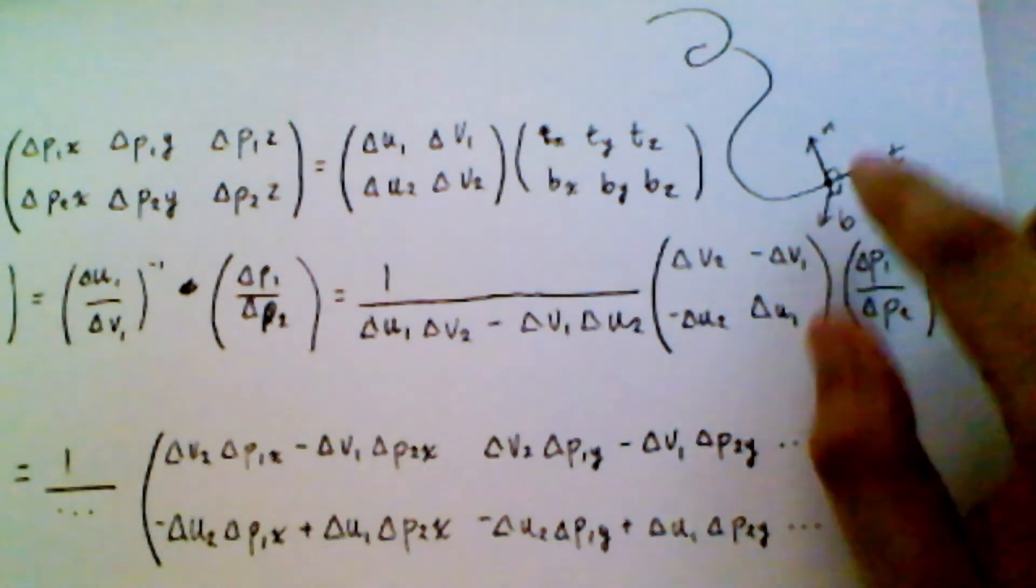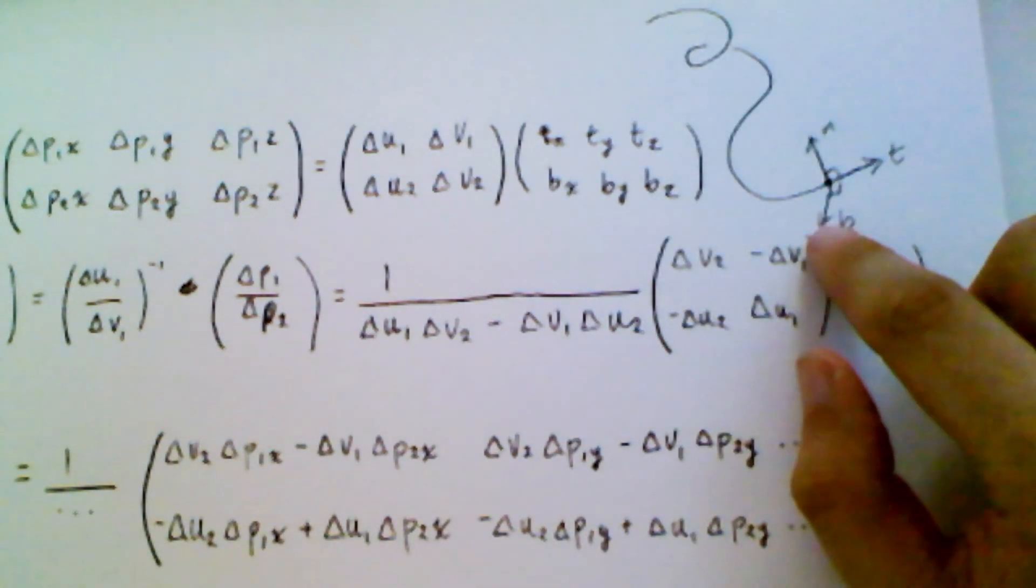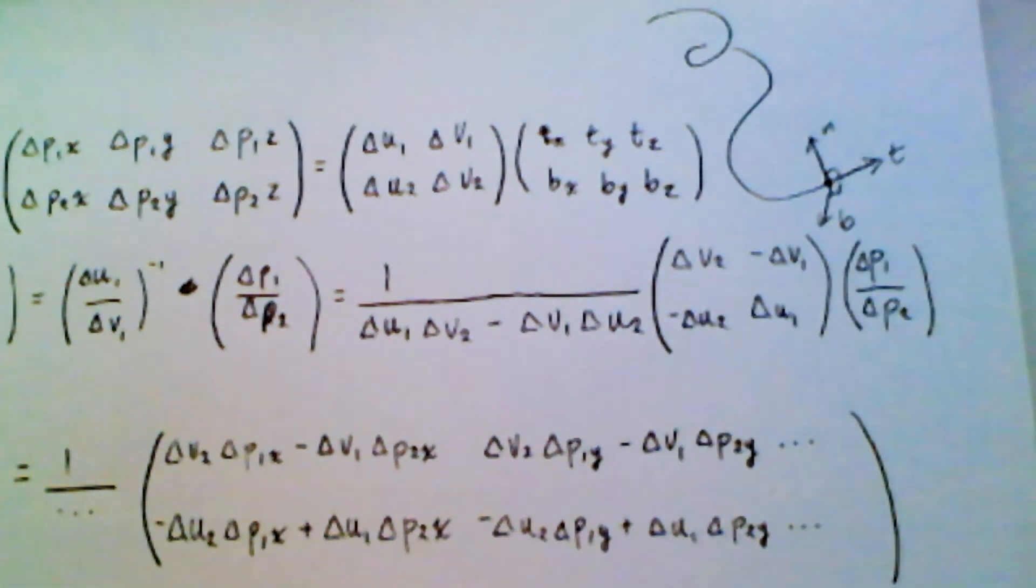Side note with the curve, it has a normal and a binormal because that's a curve. A curve can't have two tangents. On the other hand, a surface has a tangent and a bi tangent.